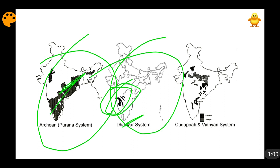I would suggest you watch the geological time scale video, the classification of rock system video, the Carboniferous system video, and the Aryan rock system video — which covers the Gondwana, Tertiary, Cretaceous, Deccan Trap and Quaternary rock systems. All links are given in the description box below. When you watch all of these videos in association with each other, this topic will become very clear to you.